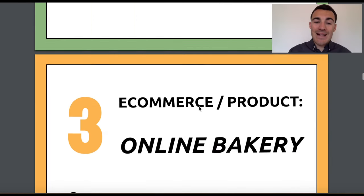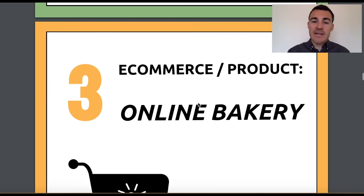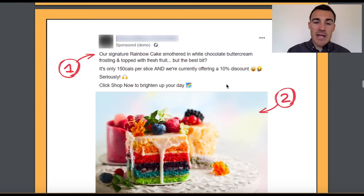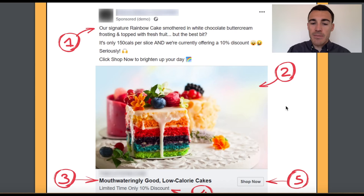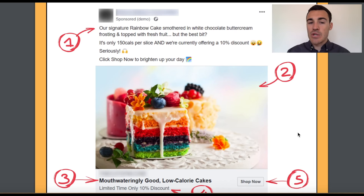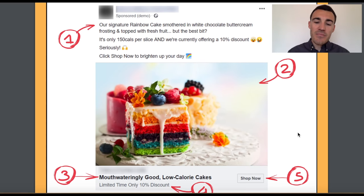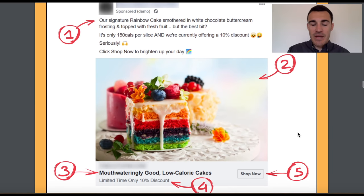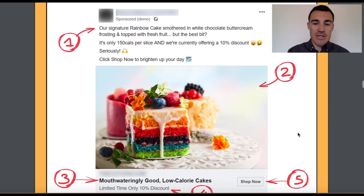Moving on to a new category — we'll put these service-based businesses behind and look at e-commerce product businesses. Here's an example. We've had to modify it a bit to not show the company's actual information, but it's very similar to the ad we ran. This one's an online bakery — they sell cakes and things like that, as you can see.